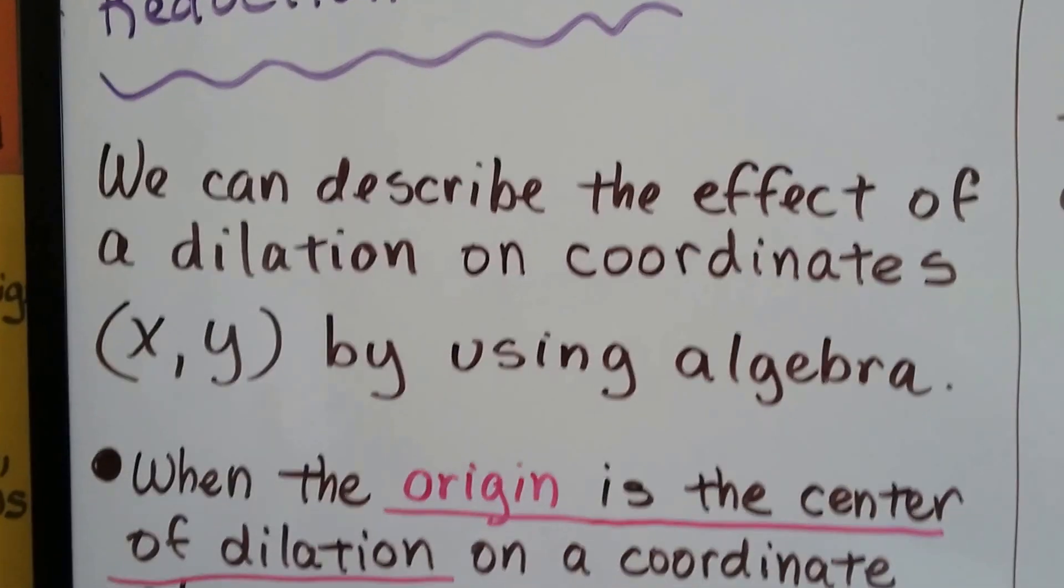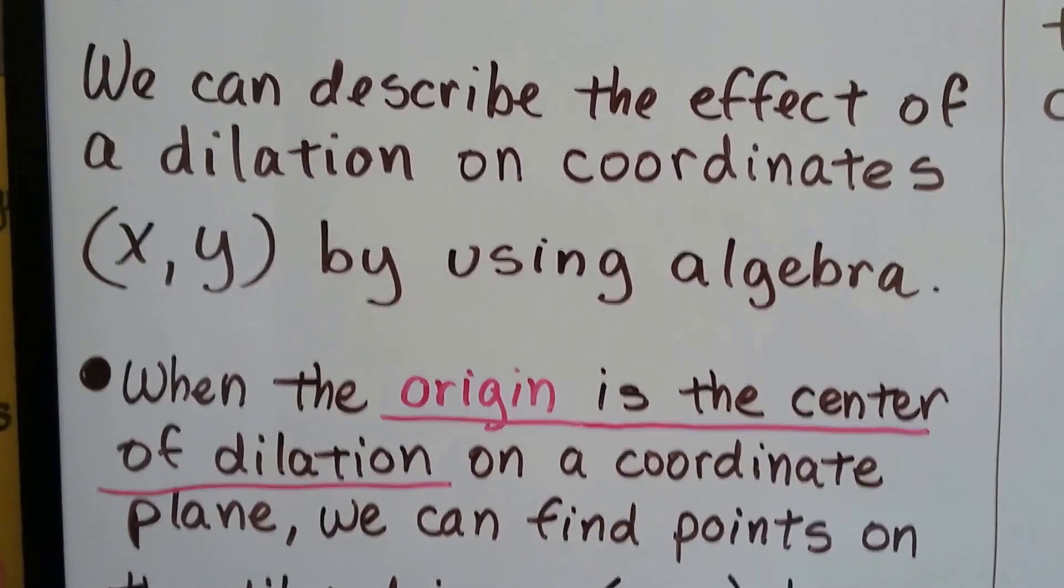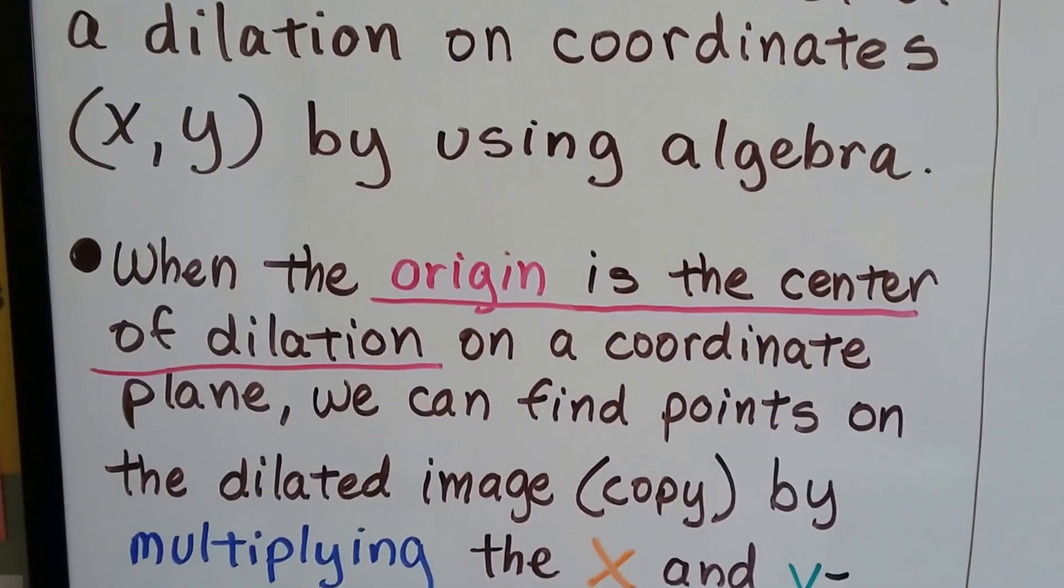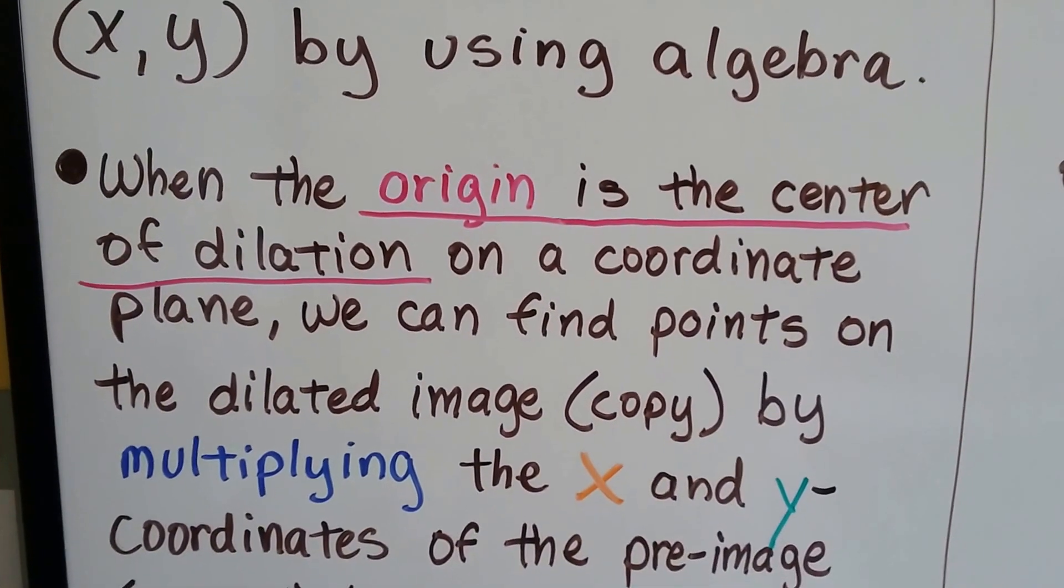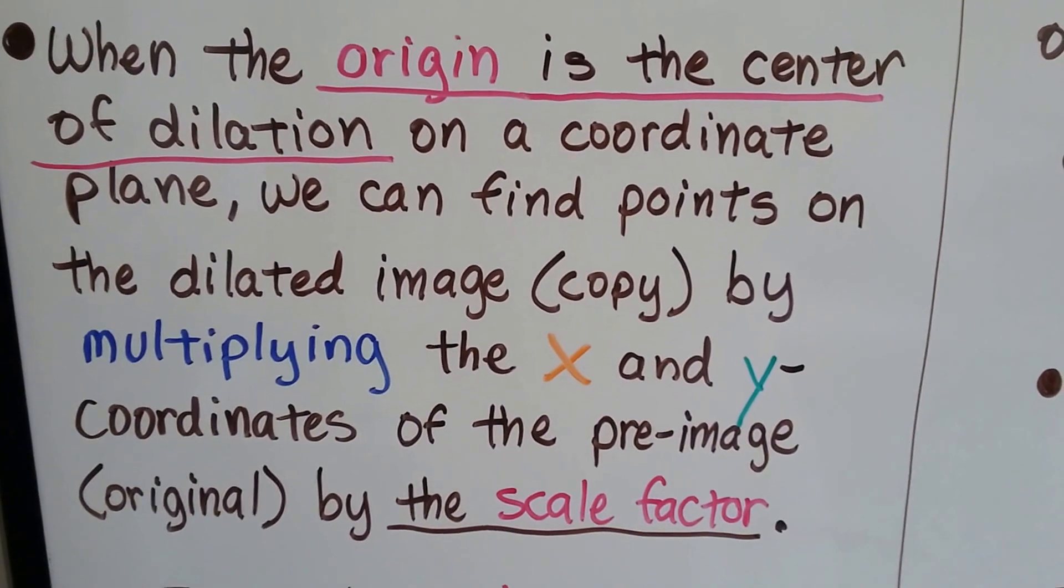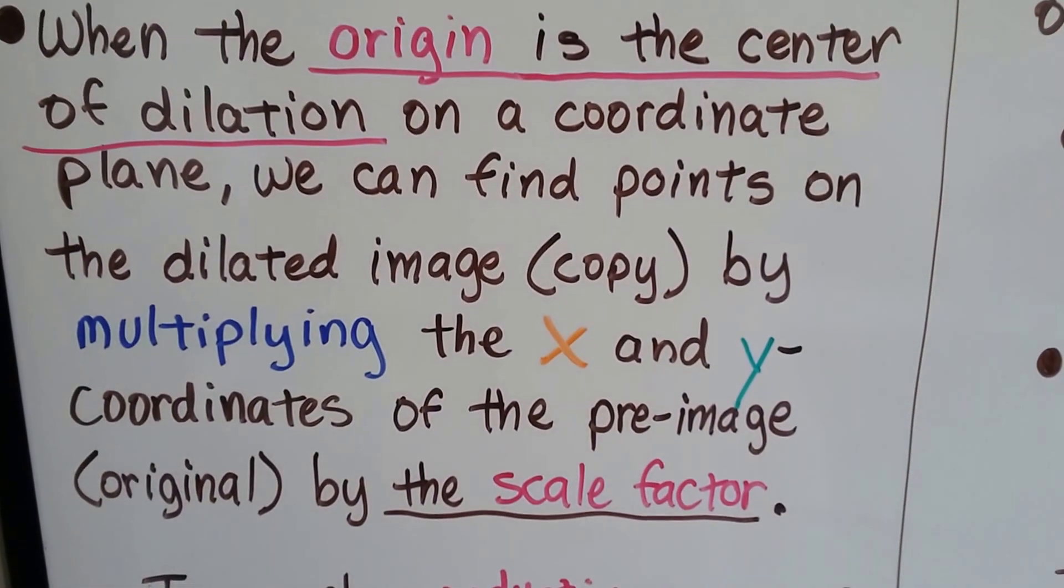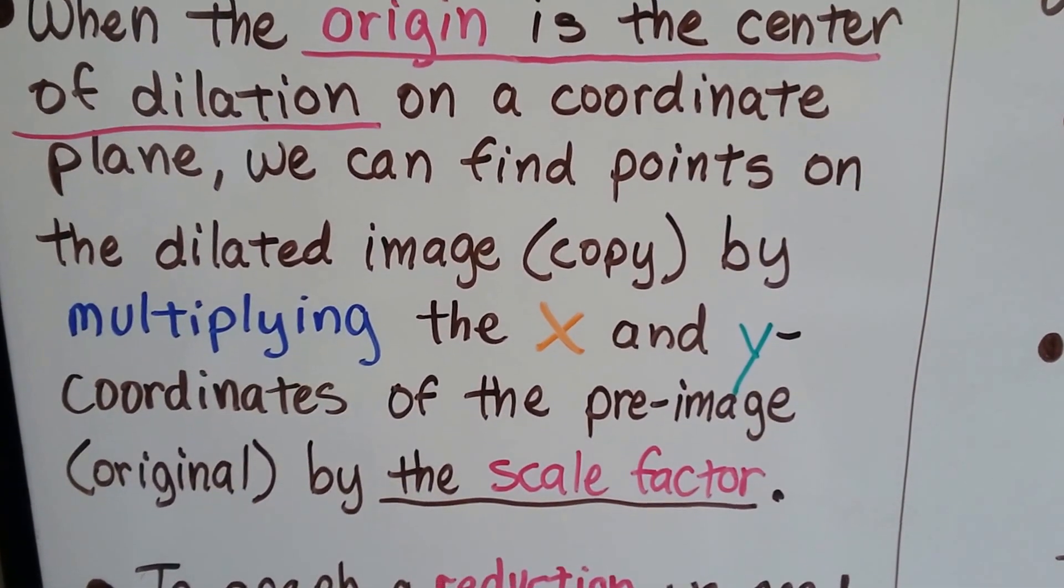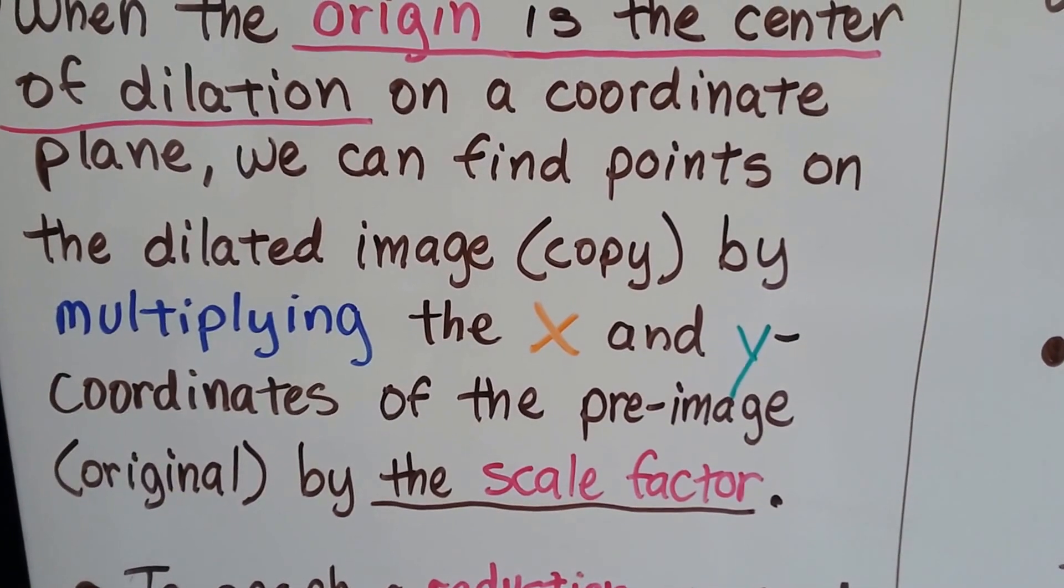We can describe the effects of a dilation on coordinates x and y by using algebra. When the origin is the center of dilation on a coordinate plane, we can find the points of the dilated image, the copy, by multiplying the x and y coordinates of the pre-image, the original one, by the scale factor.